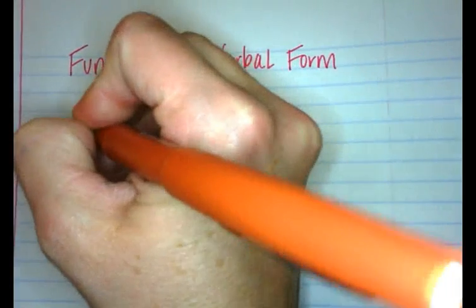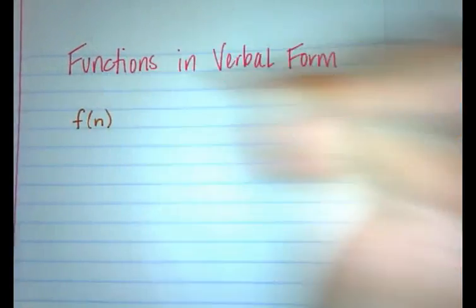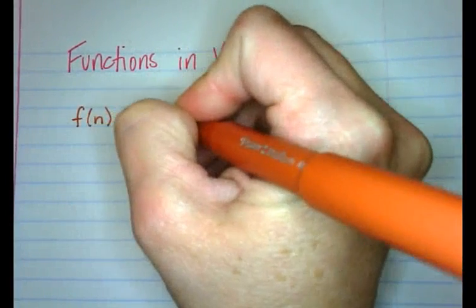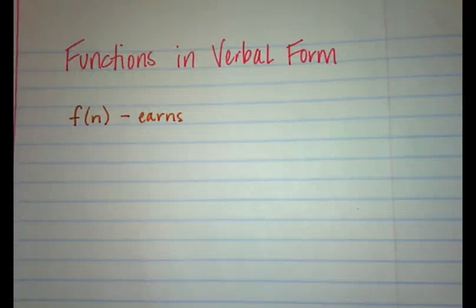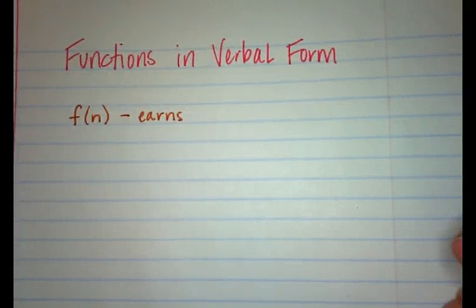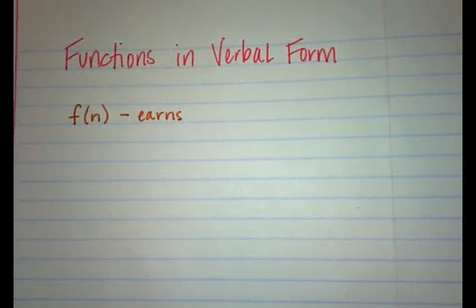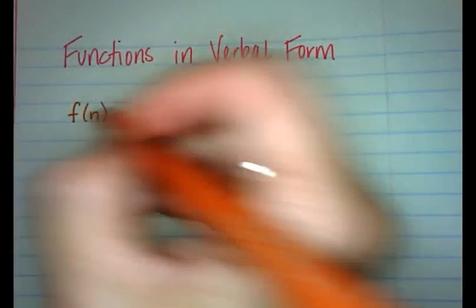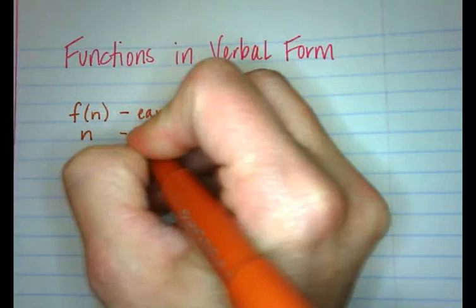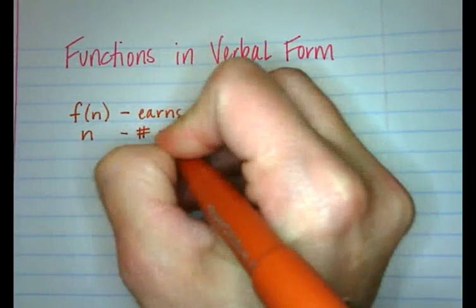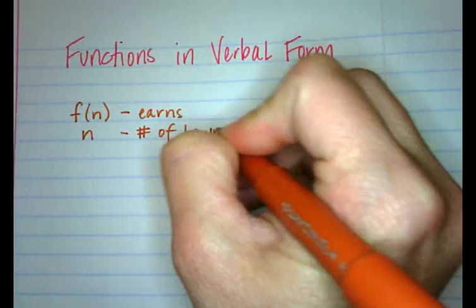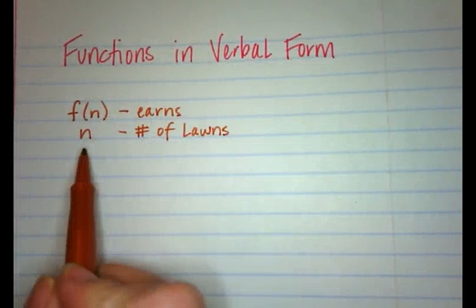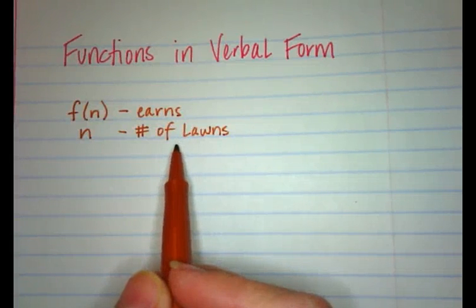The first problem says Jacob mows lawns for twenty dollars, and the amount he earns is f(n). So f(n) is the amount of money he earns. This is a function of the number of lawns that he mows. n is the number of lawns. f(n) is what he's going to earn, and n is how many lawns he mows.